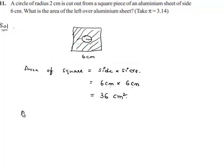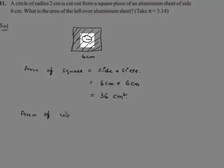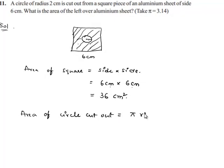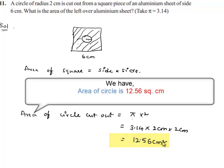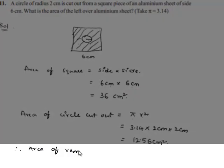Now let us find the area of the circle cut out. Area of circle equals π r², where π is 3.14 and r is 2 cm. So that is 3.14 × 2 × 2, which equals 12.56 cm².